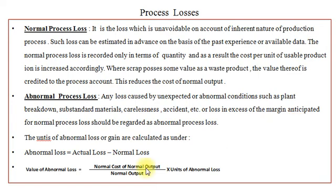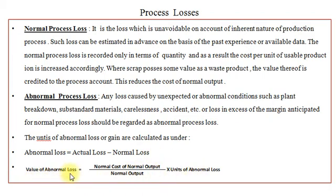So here we can say Abnormal Loss = Actual Loss − Normal Loss. By using this formula we can calculate the value or cost of abnormal loss. Abnormal loss will be recorded in the process account on the credit side.